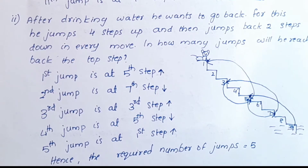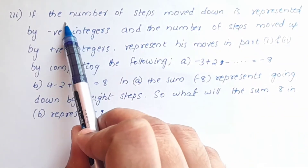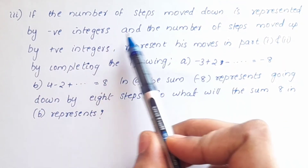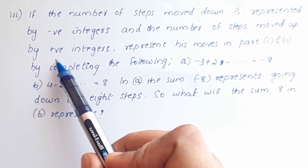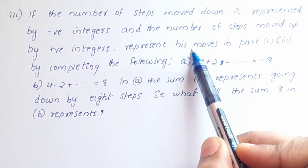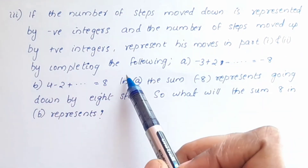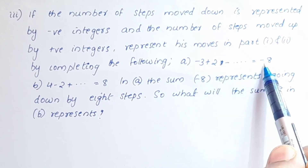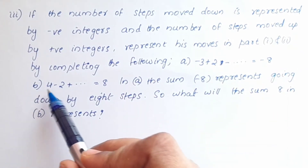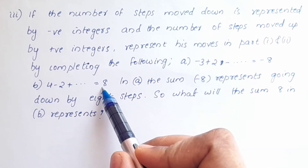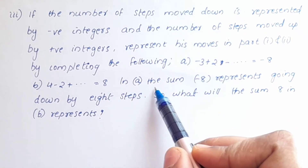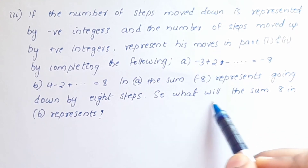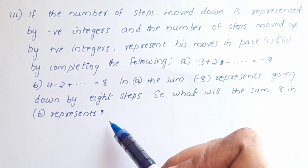For the third part: if the number of steps moved down is represented by negative integers and steps moved up by positive integers, represent the monkey's moves in parts 1 and 2 by completing: (a) negative 3 plus 2 multiplied some number of times equals negative 8; (b) 4 minus 2 multiplied some number of times equals 8.